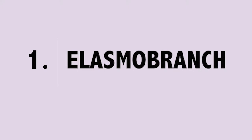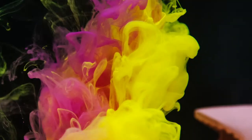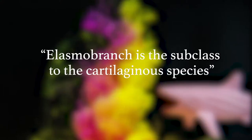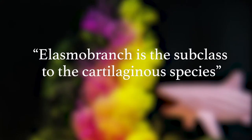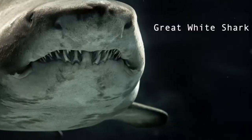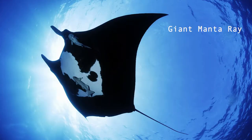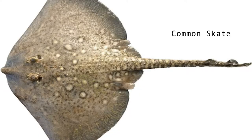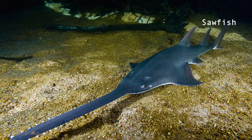The first term is Elasmobranch. You might have heard this word if you learned about sharks, rays and their allies. Elasmobranch is the subclass to the cartilaginous species belonging to the shark, ray, skates and sawfish species.